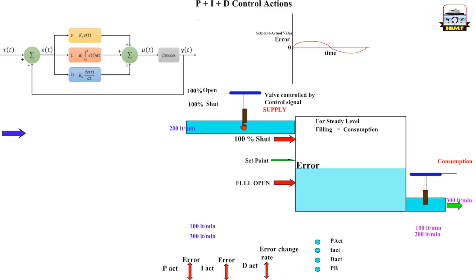Now suppose I make a relationship between this error or the deviation and the opening of the valve in such a way that I establish a proportional relationship between the error and the opening of the valve. I call this proportional action.